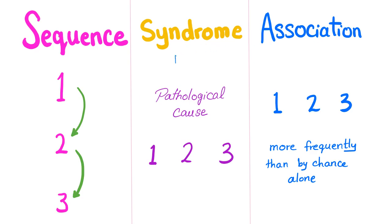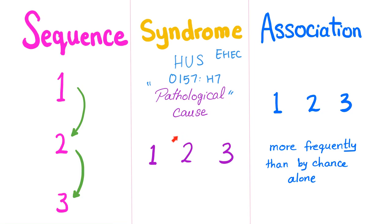Another example is hemolytic uremic syndrome, which is today's topic. Why is it a syndrome? First there is a pathological cause — the O157:H7 EHEC — and then we have a triad: microangiopathic hemolytic anemia, thrombocytopenia, and acute renal failure. One has nothing to do with the other but they seem to come together. Welcome to hemolytic uremic syndrome land.